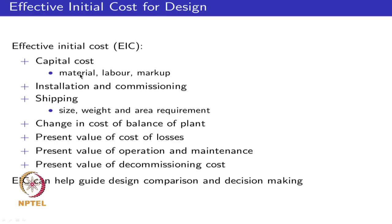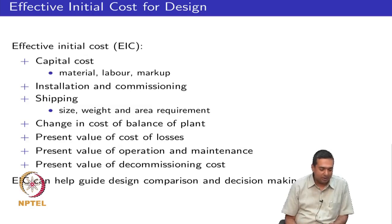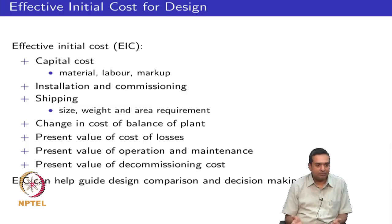Upfront costs include things like material, labour, and markup. For example, to build a power converter you need IGBTs, capacitors, controllers, and human input for manufacturing and controller development, plus a company profit markup. Once manufactured, you may need to ship it to the end location — for example, building a converter in Goa for a wind turbine in Tamil Nadu. Shipping costs depend on whether it is a bulky or compact device, and for transportation systems like aircraft and space, size and weight are very important.